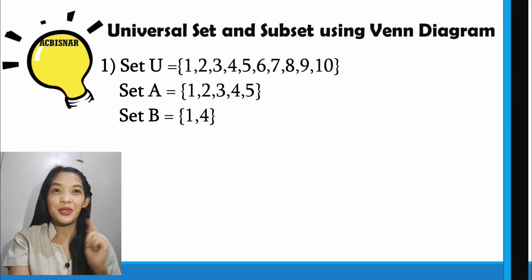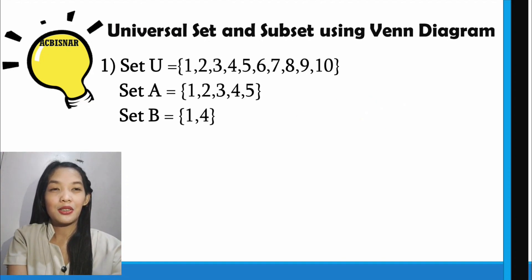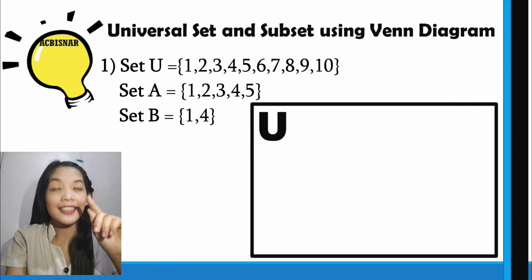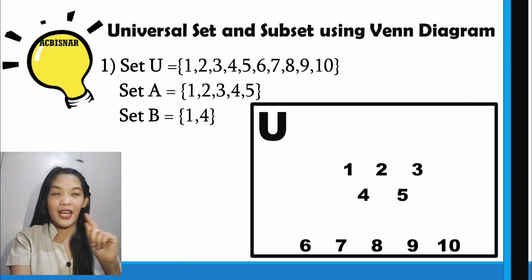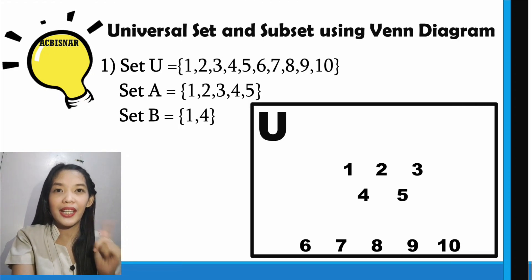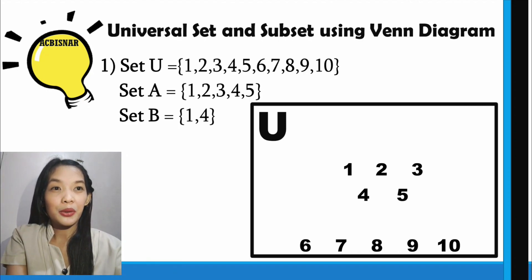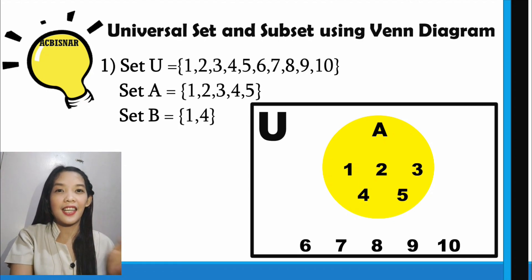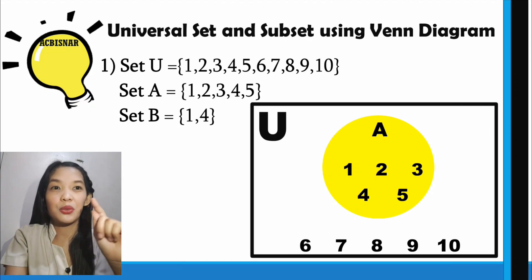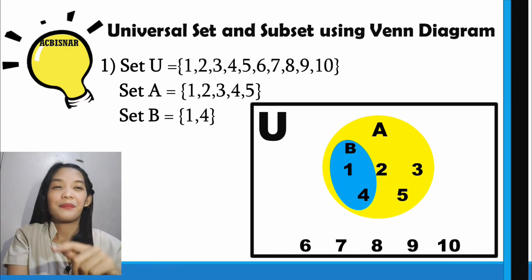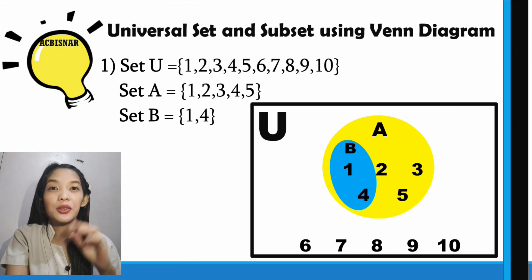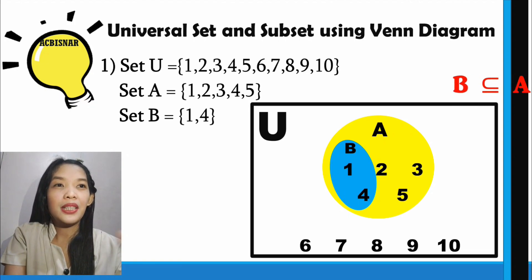Now we're going to study universal set and subset using a Venn diagram. To illustrate the universal set, we're going to use a rectangle. Since it contains the elements 1 to 10, we write those numbers inside. We have set A with elements 1, 2, 3, 4, and 5 — we use a circle to show those are the elements of set A. Now set B has the elements 1 and 4. What do you observe? Set B is also inside set A, because every element in B can also be found in A. From here, we can say that B is a subset of A.